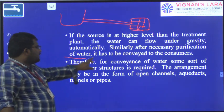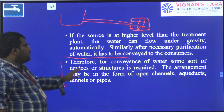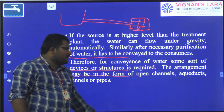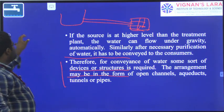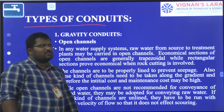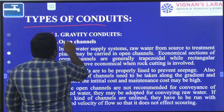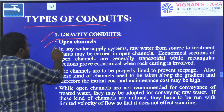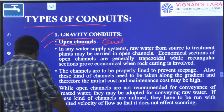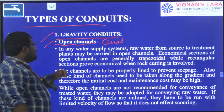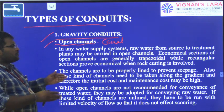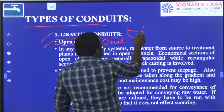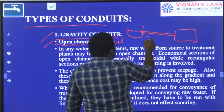After necessary purification of water, it has to be conveyed to the consumers. For conveyance of water, some sort of device or structure is required. The arrangement may be in the form of open channels, aqueducts, or tunnels or pipes. We have two types of conduits: one is gravity and another one is pressure. In the gravity conduit, we have open channels, also simply called canals. In the water supply system, water from the source to the treatment plant may be carried in open channels, since the water is not yet purified.